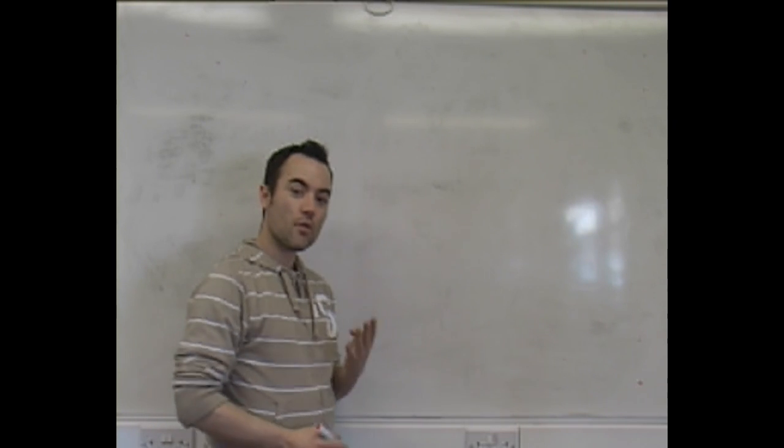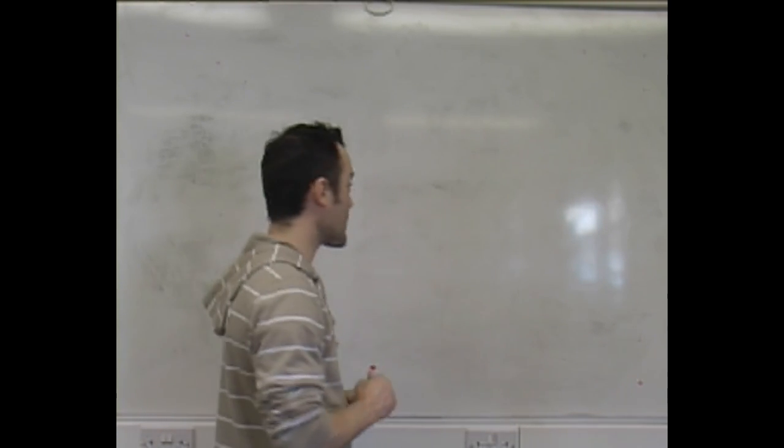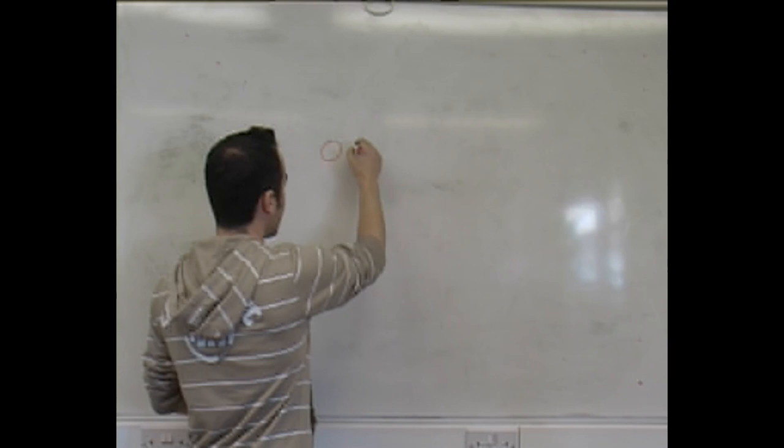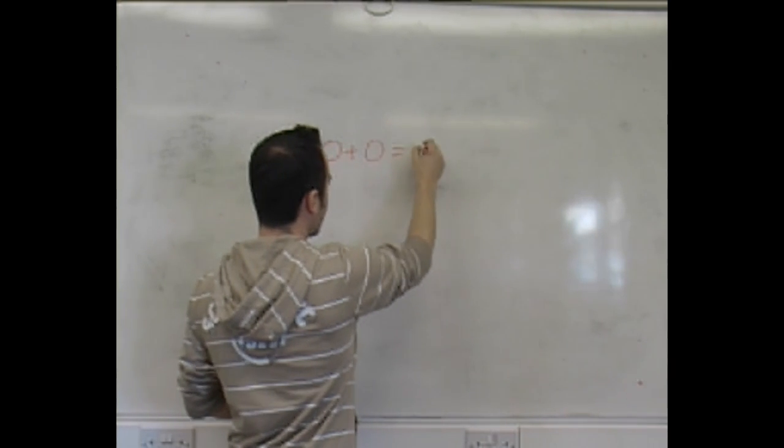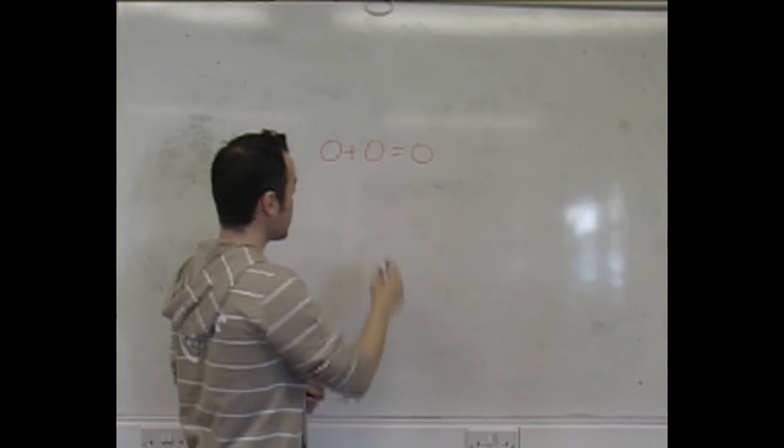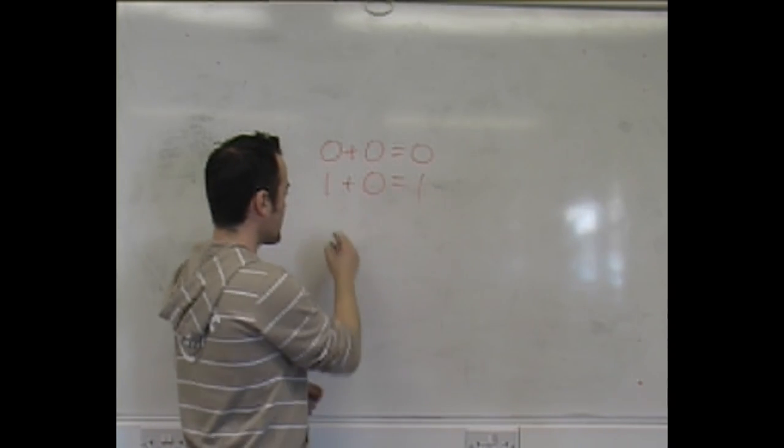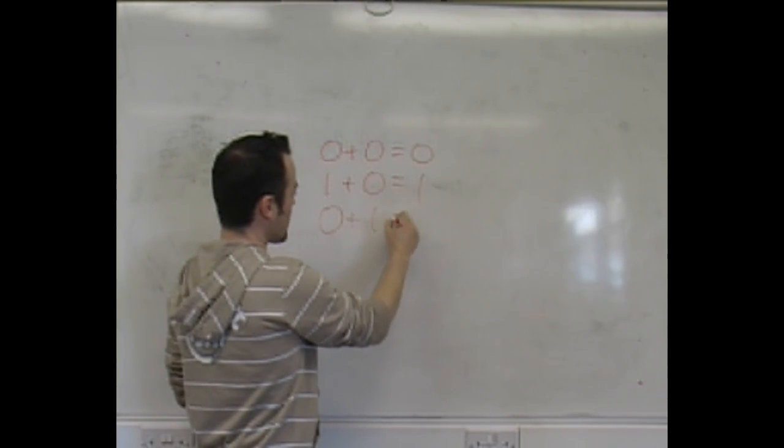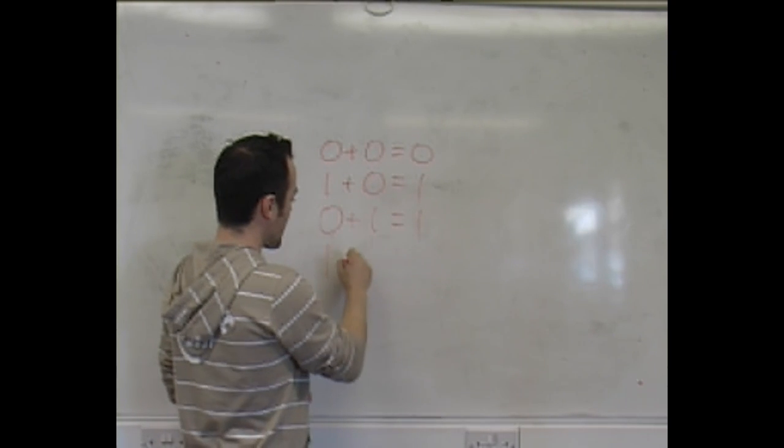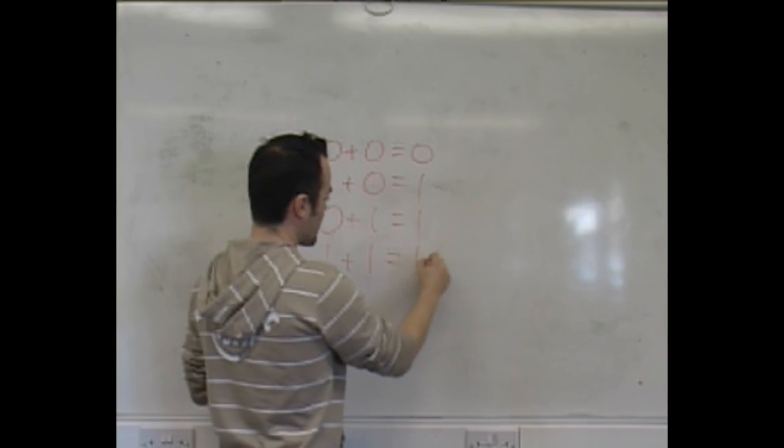Now, we need to remember four simple rules with binary addition. 0 plus 0 equals 0, 1 plus 0 equals 1, 0 plus 1 equals 1, and 1 plus 1 equals 10.